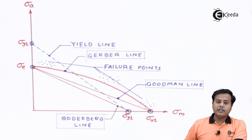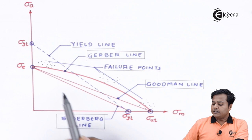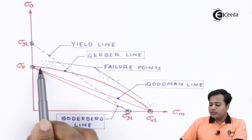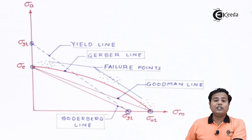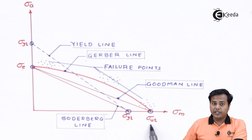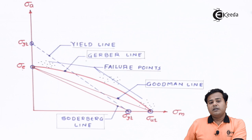The very basic curve which fits these failure points optimally — passing through some or balancing around them — was found to be parabolic in nature. This curve connects the endurance limit point on the y-axis with the ultimate tensile strength point on the x-axis. Such a line is called the Gerber line, and it is used as one of the design criteria.